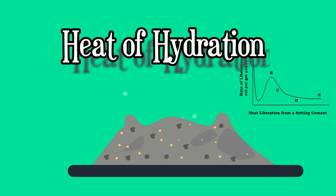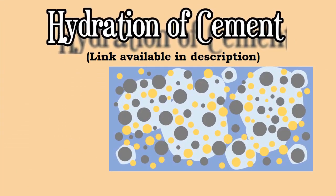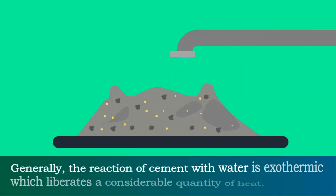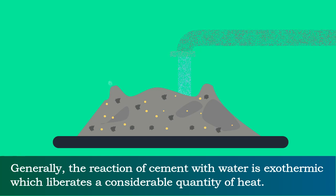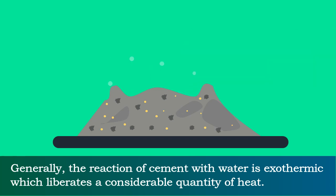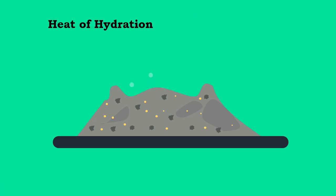Heat of hydration. In the previous video we have seen about how hydration of cement occurs and various chemical reactions responsible for hydration of cement. Generally, the reaction of cement with water is exothermic which liberates a considerable quantity of heat. This liberation of heat is called heat of hydration.